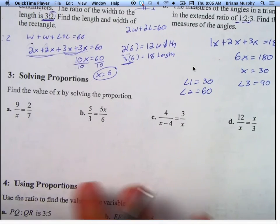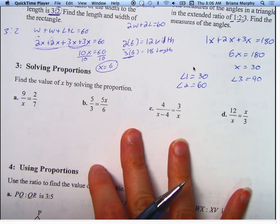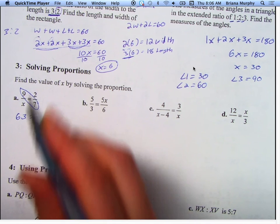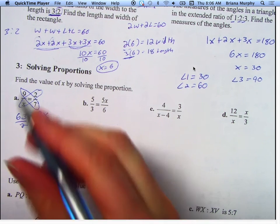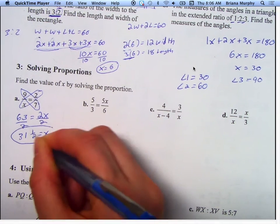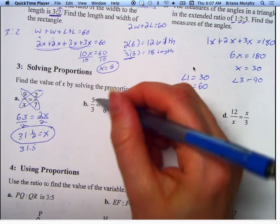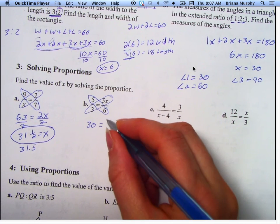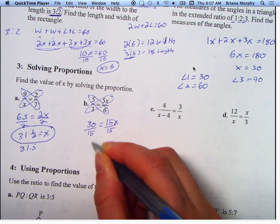Questions about that before I move on? Okay, let's solve these proportions. These should be a lot like your homework was. So a, what do I do first for a? 9 times 7 is 63. 2 times x is 2x. Divide both sides by 2, and I get 31 and 1 half equals x. If you put 31.5 is that the same thing? Yes. B: 5 times 6 is 30. 3 times 5x is 15x. How do I get x by itself? Divide by 15. X equals 2.